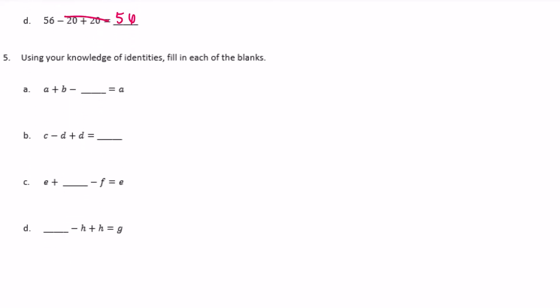And then we're going to do the same thing but with variables. So a plus b minus what gets a. We need b minus b to cancel each other out. That's actually my first example that we did up there.